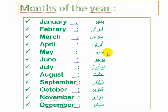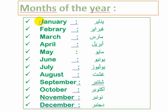Now we are going to see the names of the months of the year. The first month is January. January. January.